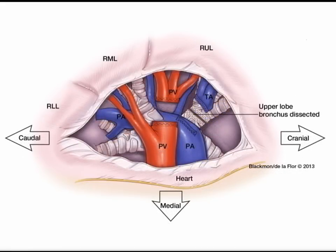Once the truncus anterior branch of the pulmonary artery has been divided, the next structure encountered is either the right upper lobe bronchus or the posterior ascending pulmonary artery. We recommend that you see which one has the most reasonable angle and, based on that decision, divide either the right upper lobe bronchus or the posterior ascending pulmonary artery branch first. Once the bronchus has been divided, you can encircle, staple, and divide the posterior ascending branch of the pulmonary artery.